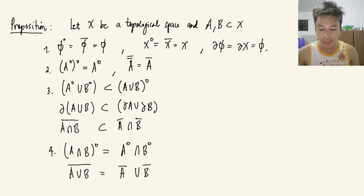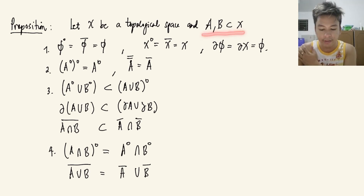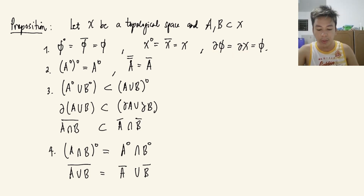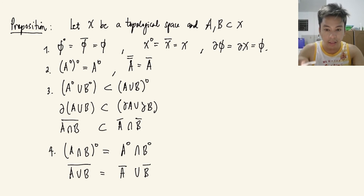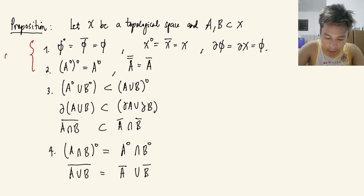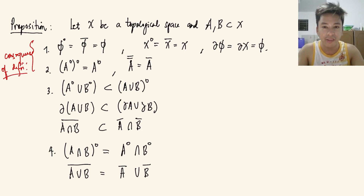For our second proposition, given topological space X with subsets A and B, we have: the interior and closure of the empty set are both empty; the interior and closure of X itself are X; and the boundary of both the empty set and X are empty. Also, the interior of the interior is just the interior, and the closure of the closure is just the closure. These follow directly from the definitions, so there is nothing to prove.